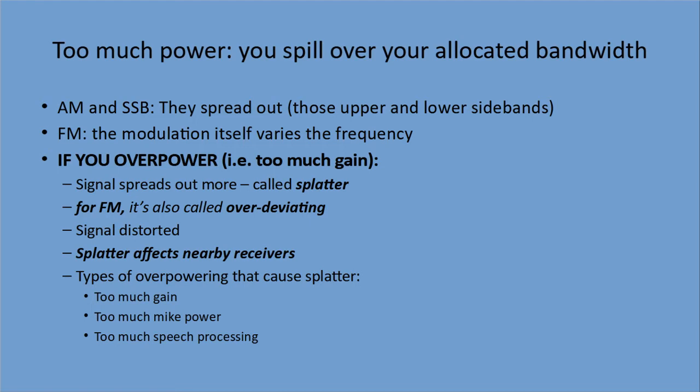So you sound distorted. Splatter also affects nearby receivers. Even with a little handheld radio, if you and your radio buddies are standing next to each other and you start transmitting, they will not hear it. The splatter effect is overpowering the local receivers, because any transmitter generates a certain amount of noise and it's usually pretty local. Another radio that's too close by will be affected by it.